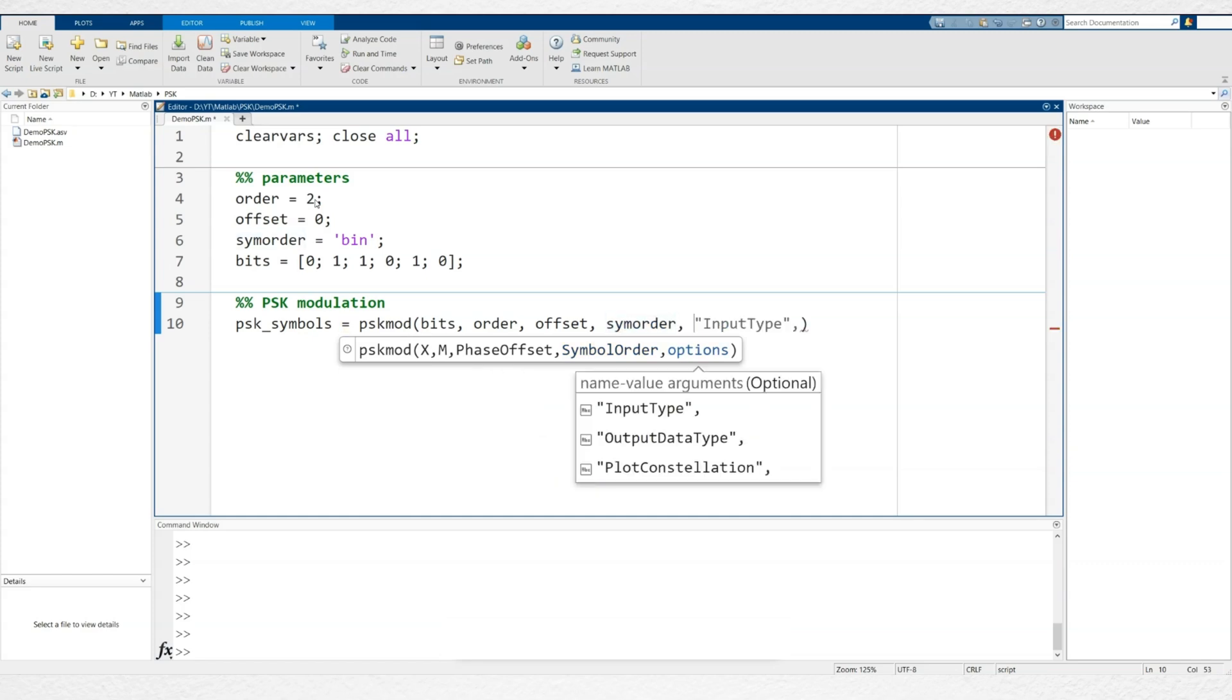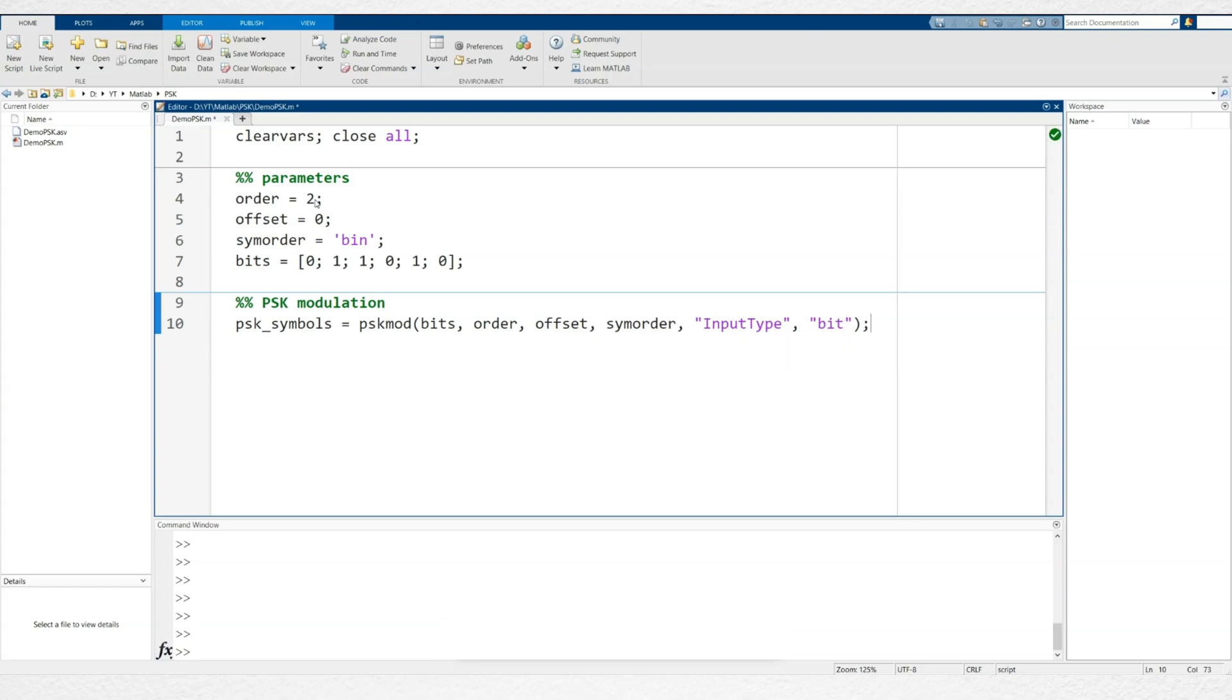Finally, we define the input type, where we indicate that our input data, bits, is in binary format. In this section, we'll also calculate the symbol length, which will come in handy later in the code.